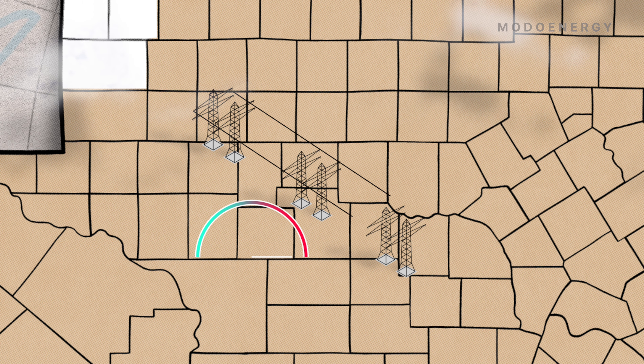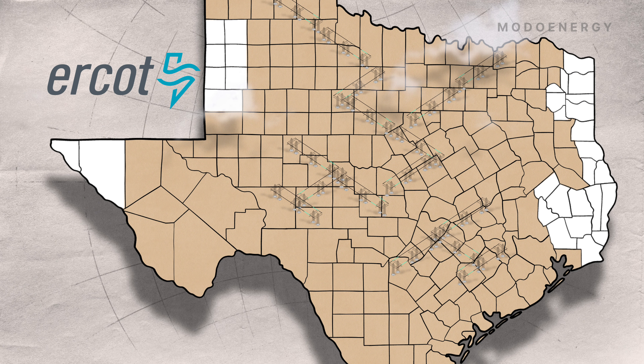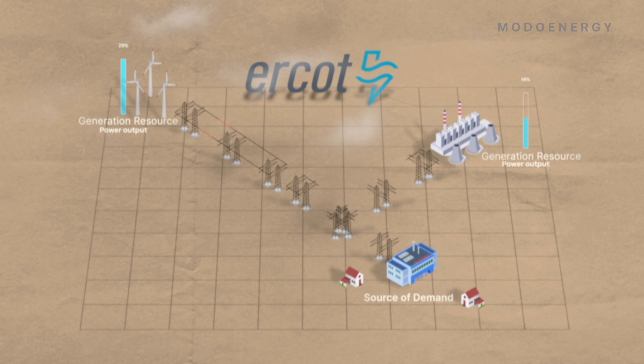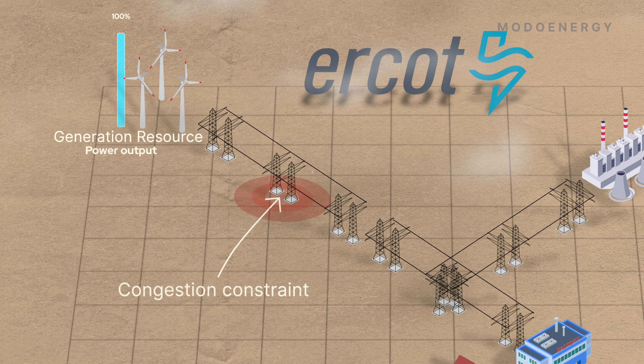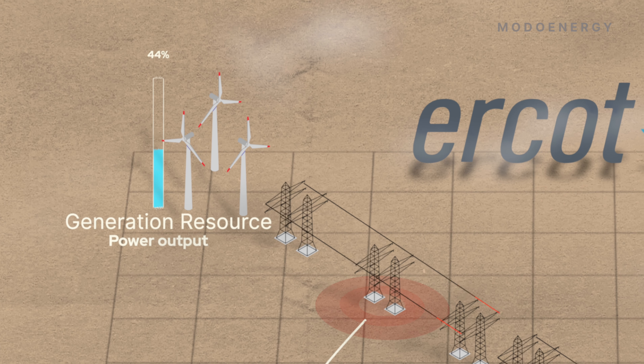To protect equipment, ERCOT monitors the power flowing across all elements in the transmission network. In ERCOT, congestion is the cause of price disparity between settlement points. When congestion occurs, ERCOT needs to take action. Usually, this means re-dispatching generation to reduce the amount of power flowing across the congested part of the network.